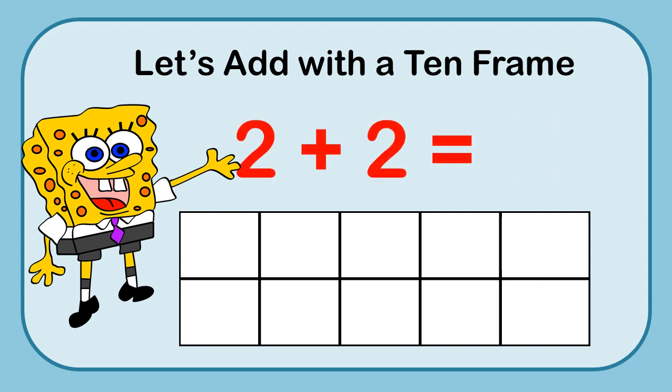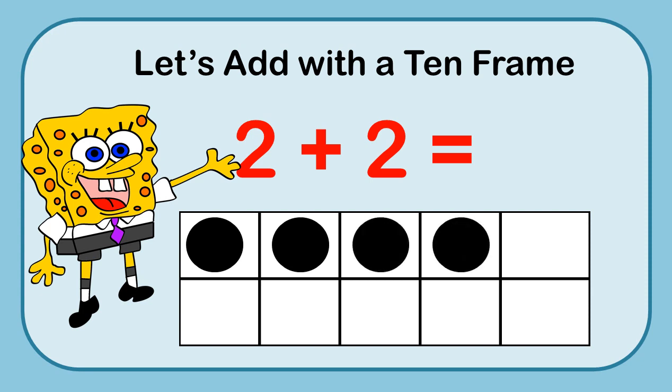Let's take something different. All the other ones have been a 1 plus a number. Let's do 2 plus 2. I'm going to put 2 markers: 1, 2. And then add 2 more: 1, 2. And count them all up: 1, 2, 3, 4. So 2 plus 2 equals 4.